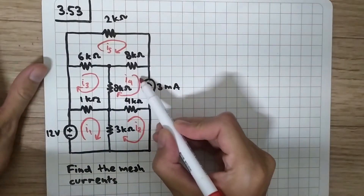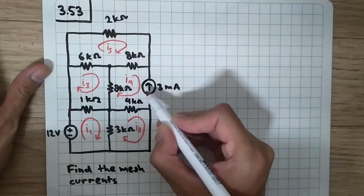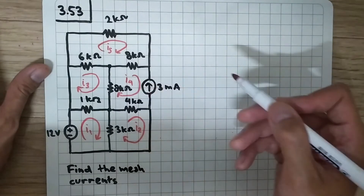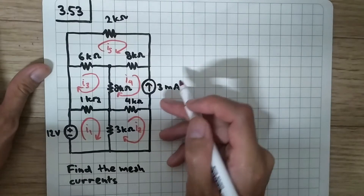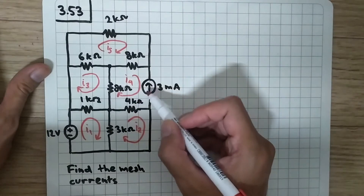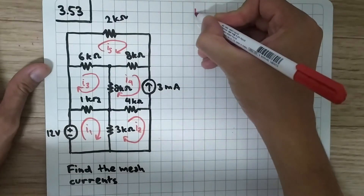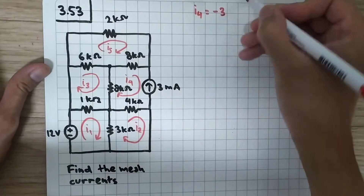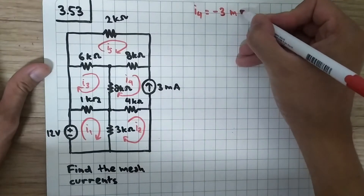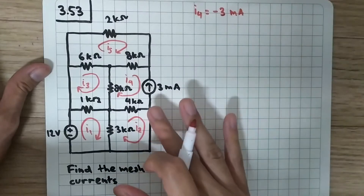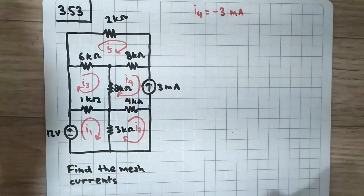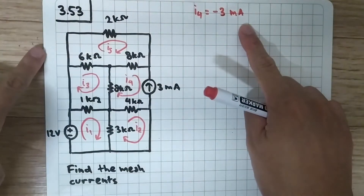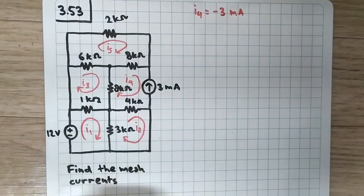Here we see i4, and i4 is going in the opposite direction of this current source. This current source is the only current that passes through here, so the value of i4 is the negative of the current source. Therefore, i4 equals minus 3 milliamperes.